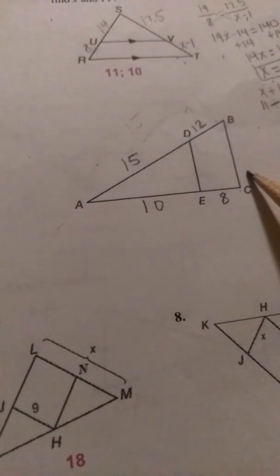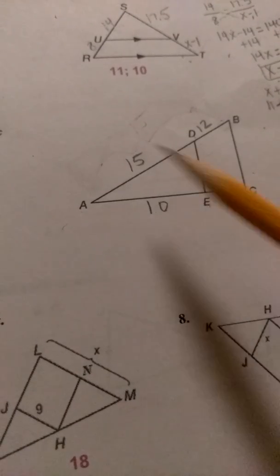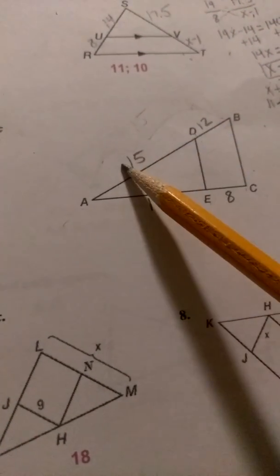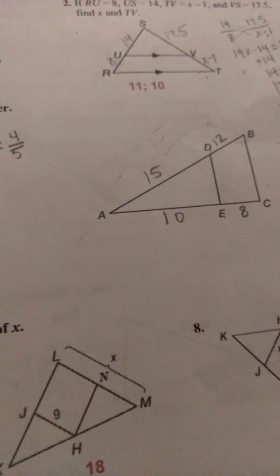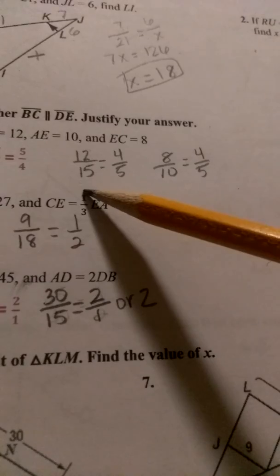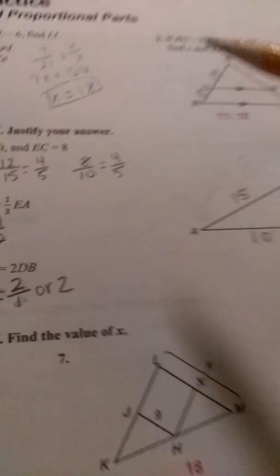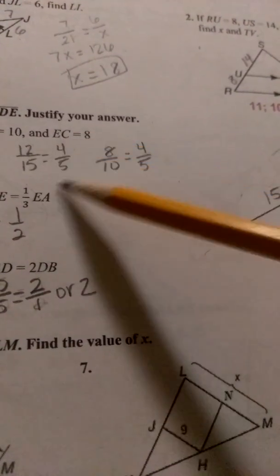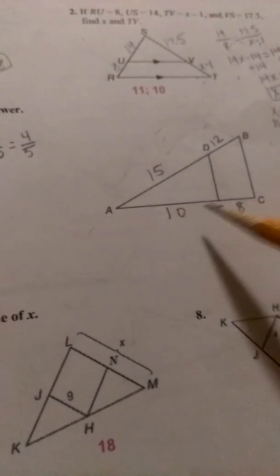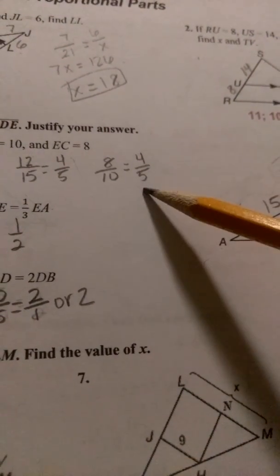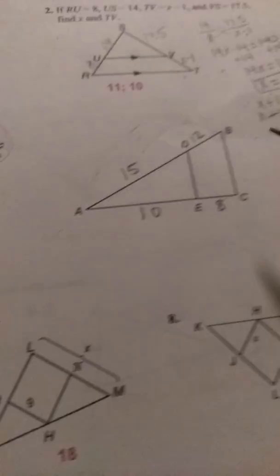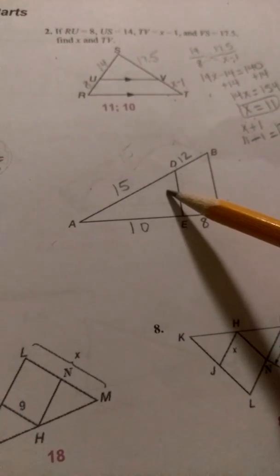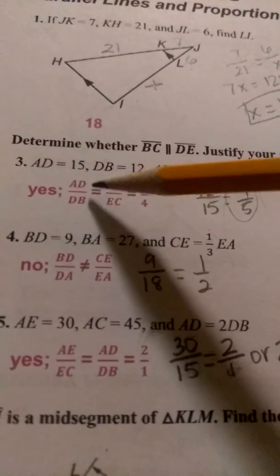So we're trying to determine if segment BC is parallel to DE, and in order to do that, this ratio is going to be the same as this ratio, if indeed these two are parallel. So we want to compare that. We put 12 over 15 and set it equal, and then reduce to get 4 fifths, and then we put the 8 over 10, and then reduce, and we get 4 fifths. So because these two are the same, then we can determine that yes, indeed, these two lines are parallel, just like here.